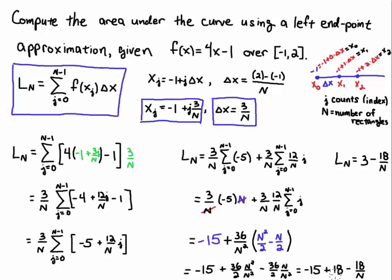Next, that simplifies. 18 minus 15 is 3. I have a minus 18 over n. And this is the left endpoint approximation in terms of n. So if n were 10, then this would be 18 divided by 10, which is 1.8. So it would be 3 minus 1.8. And that would be 1.2. So the left endpoint approximation would give us 1.2. And so on and so forth.